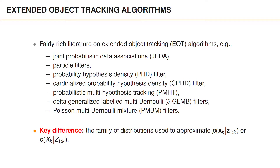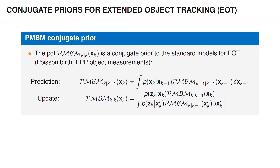Generally speaking, these algorithms are assumed density filters, and a key difference between the algorithms is that they use different families of distributions to approximate the posterior distribution. For instance, the PHD filters approximate the random finite set posterior X_k as a Poisson point process, whereas the CPHD approximates the posterior using cluster processes. One can show that the Poisson multi-Bernoulli mixture distribution is a conjugate prior for the extended object tracking models.